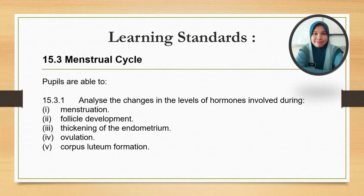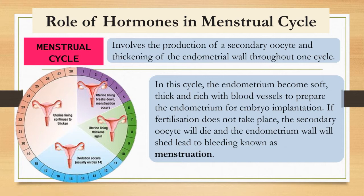Before we go into the role of hormones in the menstrual cycle, let's first look at what the menstrual cycle is. It is a cycle that involves the production of a secondary oocyte and the thickening of the endometrial wall throughout one cycle.